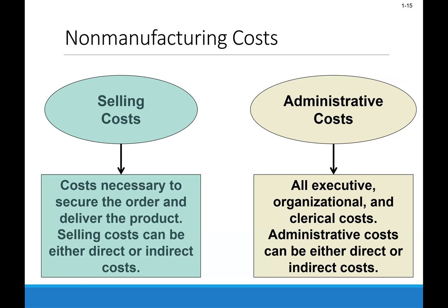Period costs include the selling cost and administrative costs that are part of the income statement, and they get expensed immediately. Those period costs are non-manufacturing costs, so you'll never run them through the manufacturing process. They are period costs that get expensed on the income statement in the period in which they were incurred.